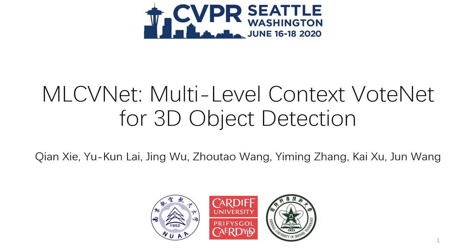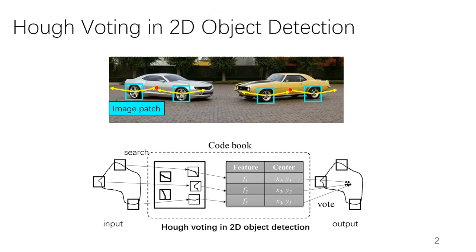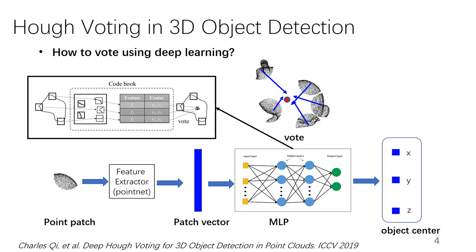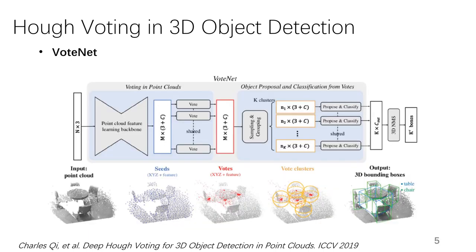I will briefly introduce our multiple-level context VoteNet. Huff voting was first used in 2D object detection. In 3D, it can also work well. VoteNet introduces Huff voting into 3D deep learning based object detection.